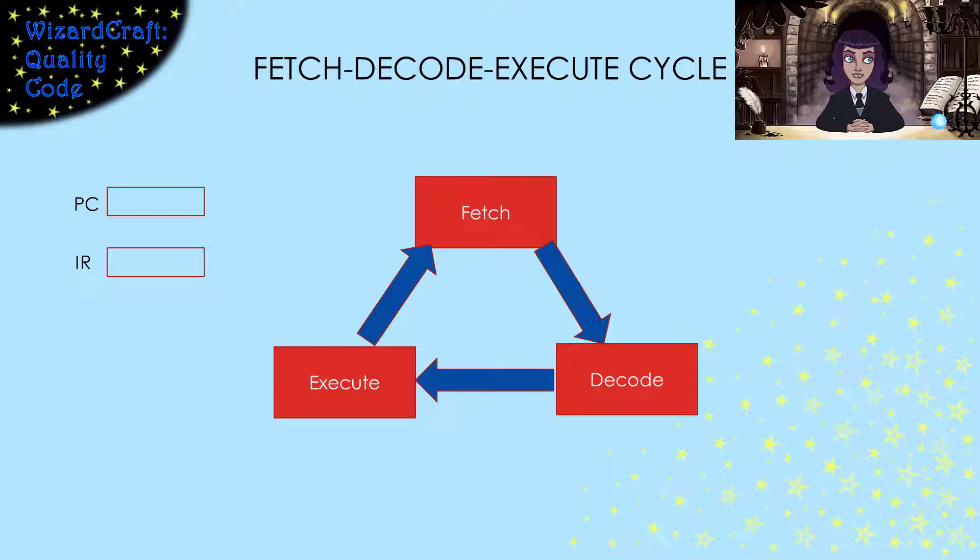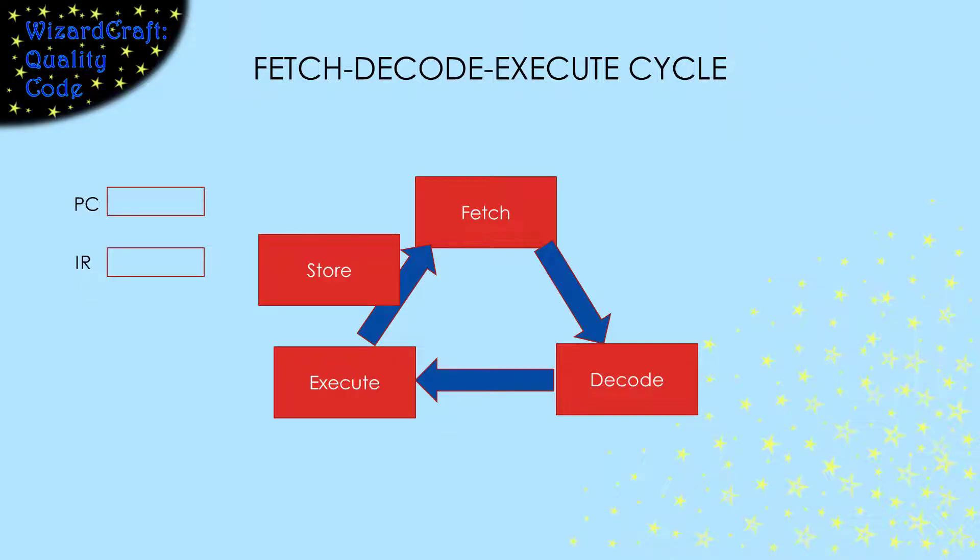So the fetch part of this is essentially, read the memory location the program counter points to and store that data into the instruction register. While this cycle is called the Fetch, Decode, Execute cycle, there may also be one more piece, storing something back into memory. Because writing to memory takes a lot longer than simple arithmetic, it can also be considered a separate part of the Execute part of this cycle.